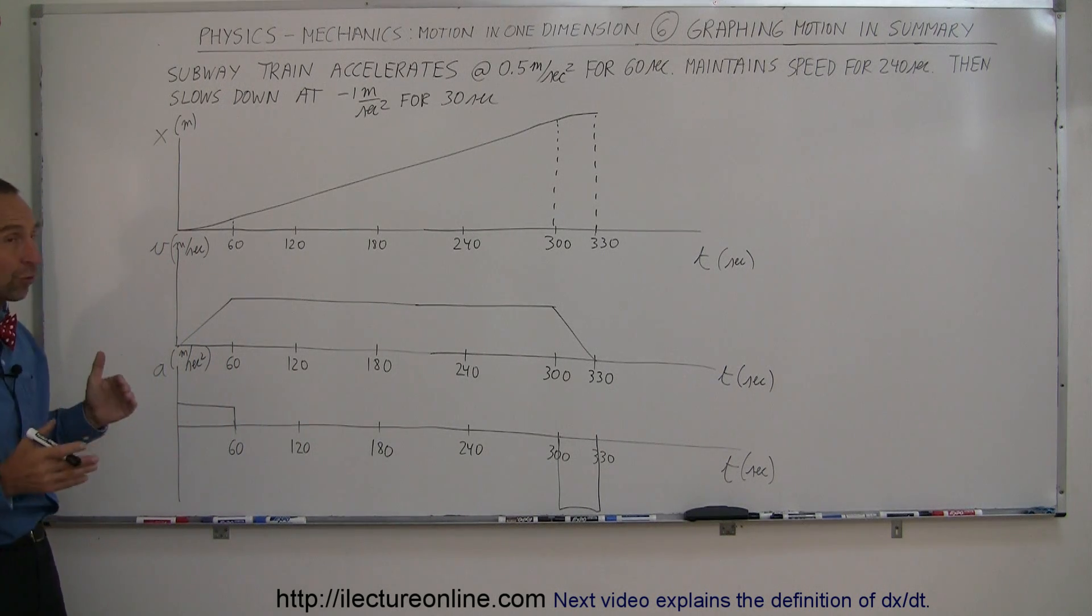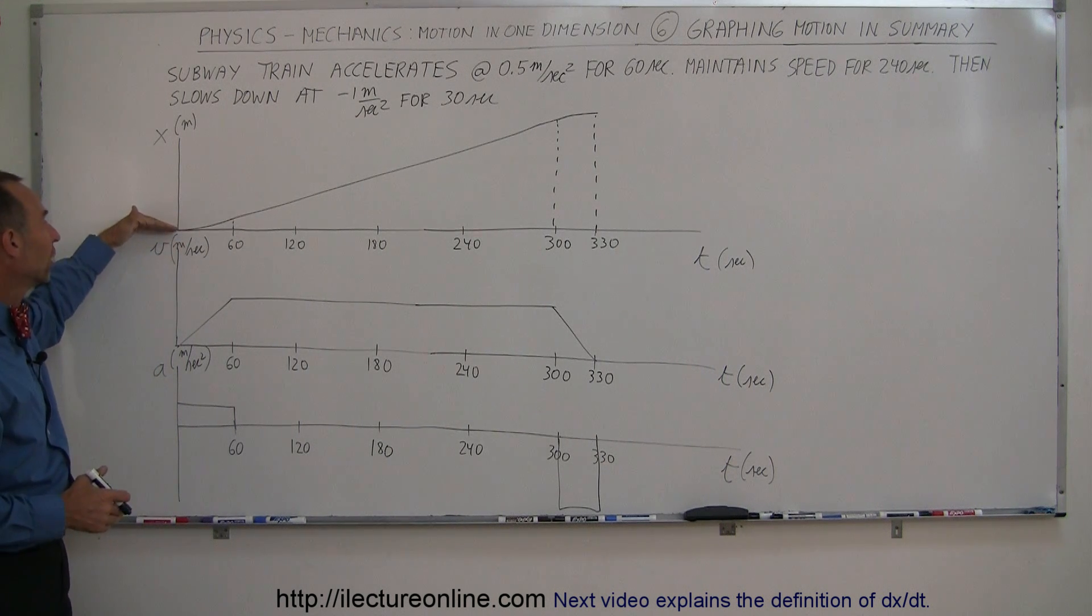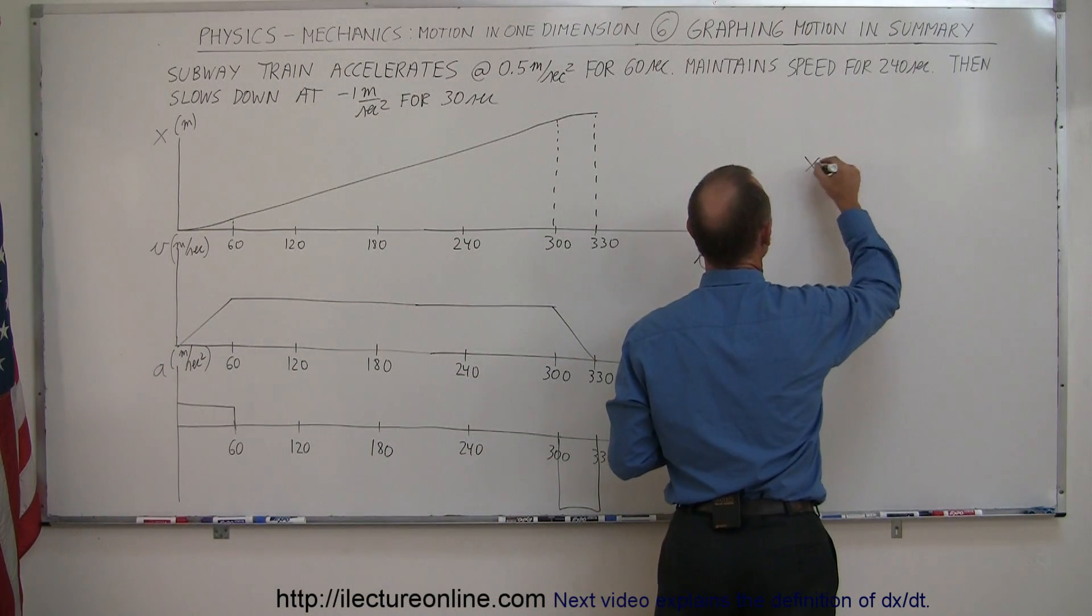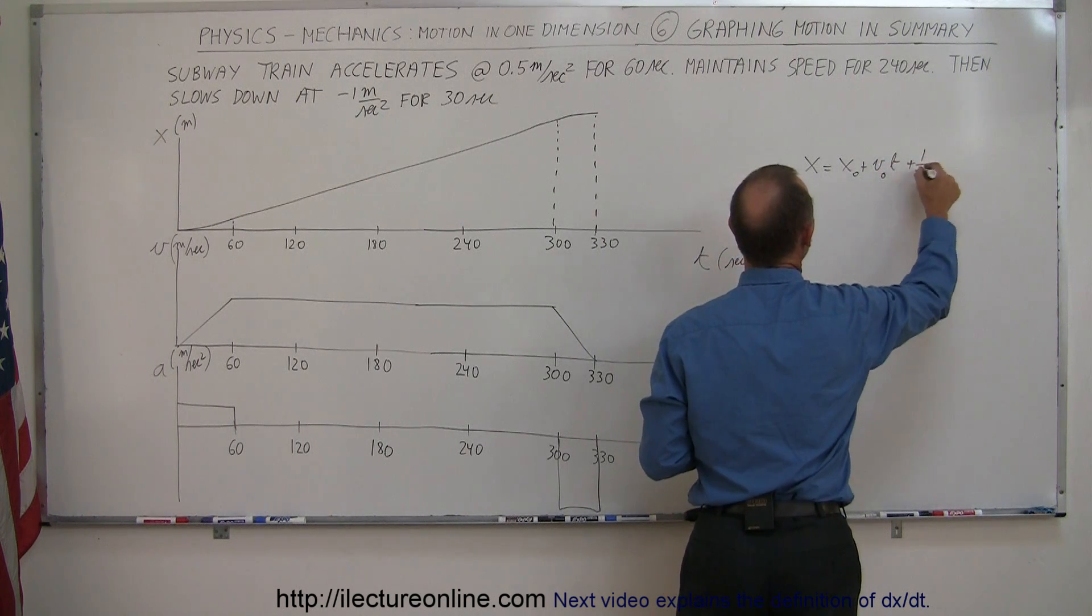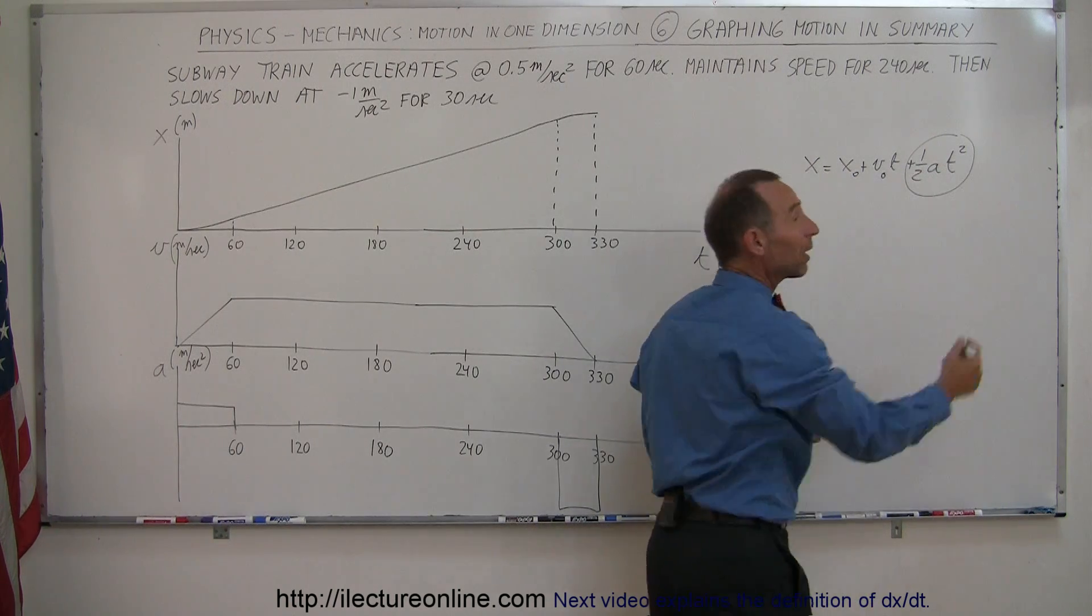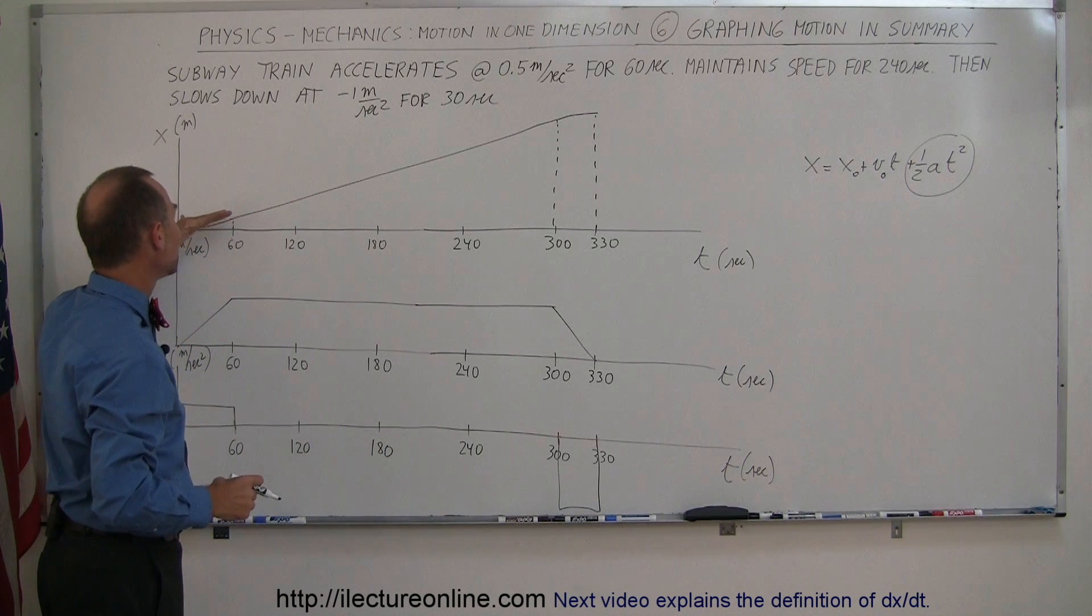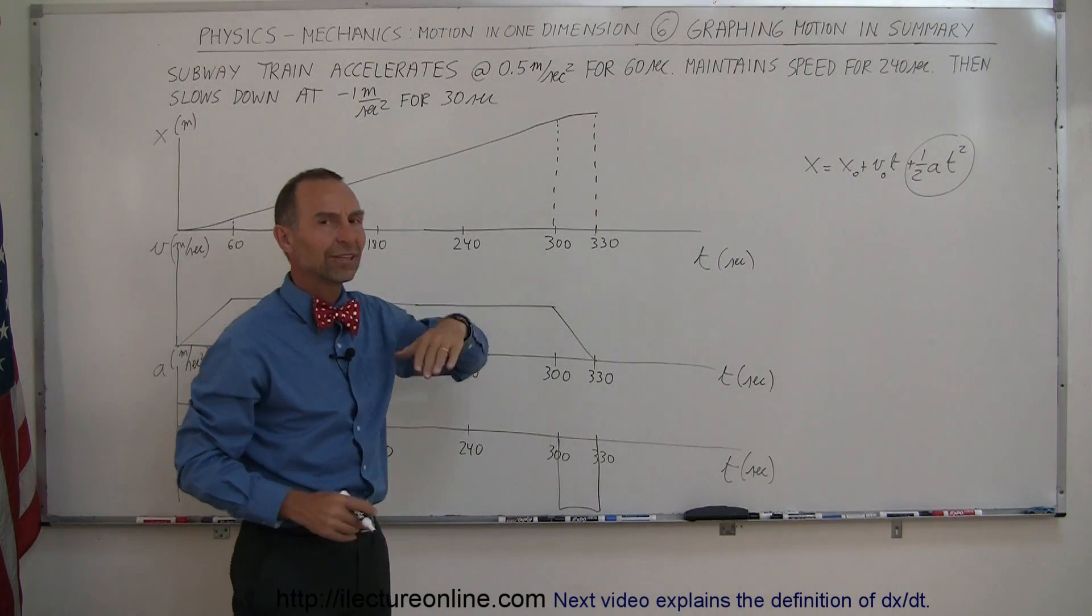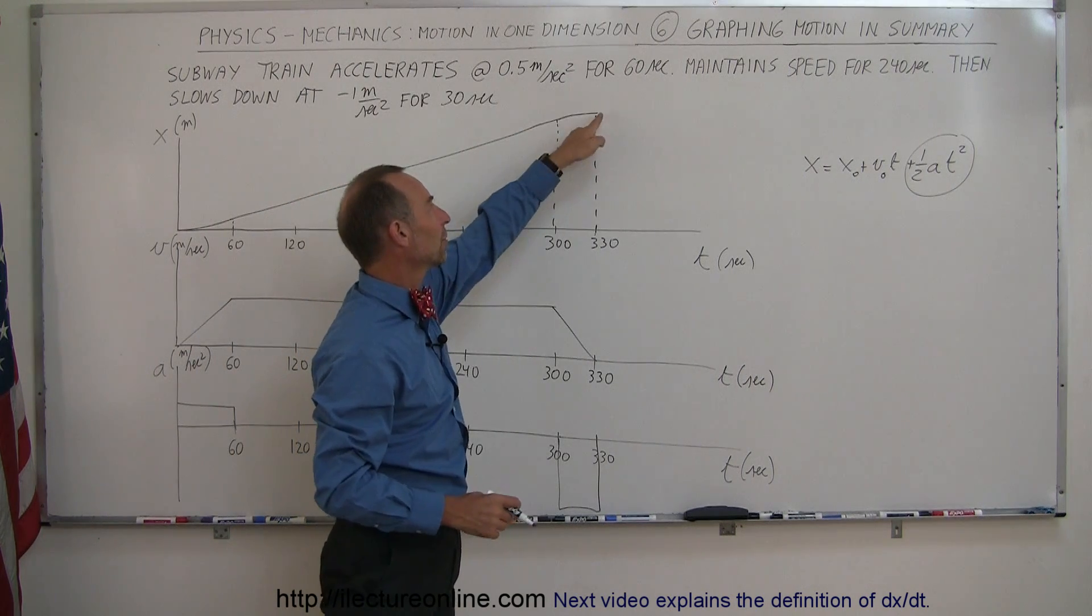Here are the three graphs. The first graph is position versus time. There's a parabolic curve right here because the equation of kinematics says x equals x naught plus v naught times t plus one half a t squared. This term shows that position is a function of time squared, and so as it's increasing in speed, you have this parabolic shape. Then it maintains that slope because velocity is not changing, and then at the end it slows down, and you have a parabolic shape.